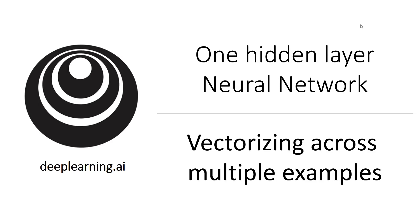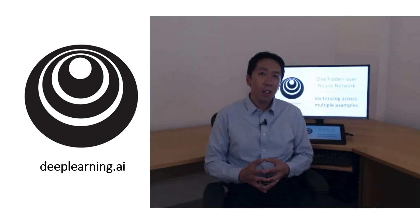In the last video, you saw how to compute the prediction on the neural network given a single training example. In this video, you see how to vectorize across multiple training examples.